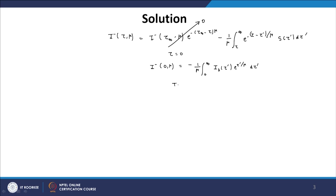The temperature distribution is known: T = T₀ e^(−z), where L is basically equal to 1. So I⁻(0, μ) equals −(1/μ) ∫ from 0 to ∞ of (1/π) σ T⁴ · e^(τ′/μ) dτ′. Since we are dealing with the gray problem, we write (1/π) σ T⁴. Substituting the temperature distribution T = T₀ e^(−z) gives I⁻(0, μ) = −(σ T₀⁴)/(π μ) ∫ from 0 to ∞ of e^(−4z/kL − τ′/μ) · e^(τ′/μ) dτ′.